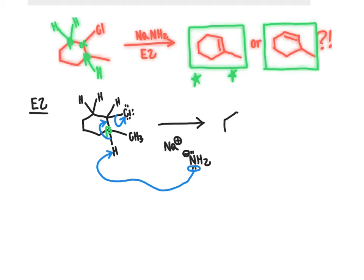Our product here matches what we've drawn up top: a carbon-carbon double bond with a methyl group bonded to it. We would also create inorganic products: a chloride anion, a pretty stable product, as well as NH₃. We took our NH₂⁻, it picked up a proton from our organic molecule to become NH₃, which still has one set of lone pair electrons present in the final product.